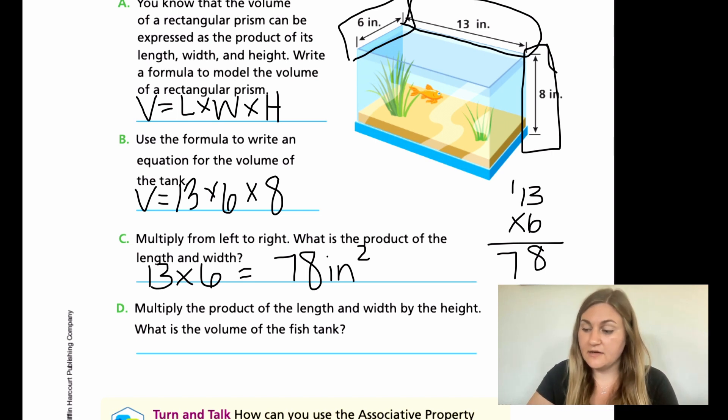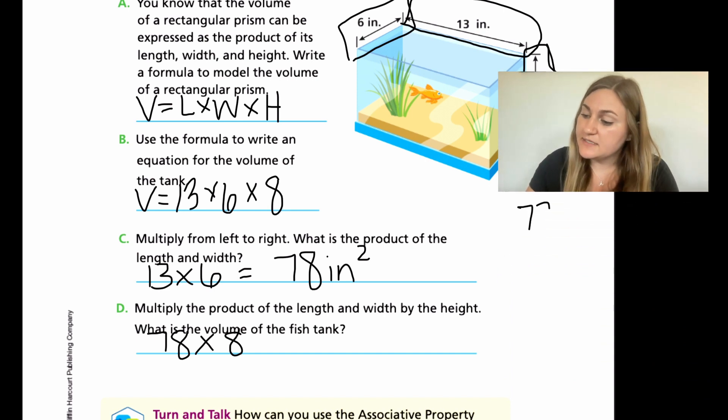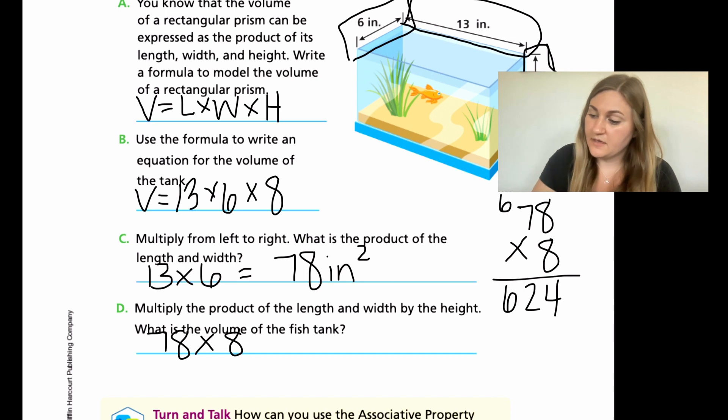For D, multiply the product of the length and the width, which means take the answer and multiply it by the height. So my answer was 78, and now I'm multiplying it by the height, which we said was 8. Now what is the volume of the fish tank? So we need to solve these two to find the total volume. So I'm going to take 78 and multiply it by 8. 8 times 8 is 64. 8 times 7 is 56, plus two more is 62. So I know that my area is 624.